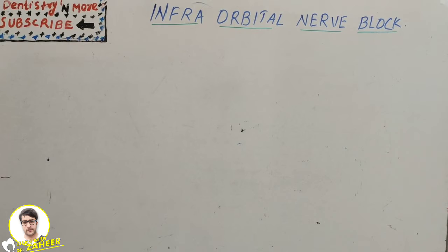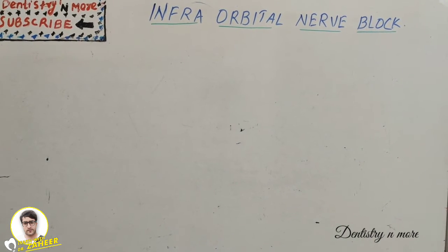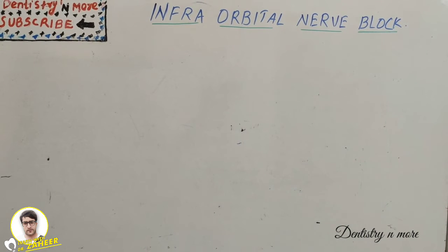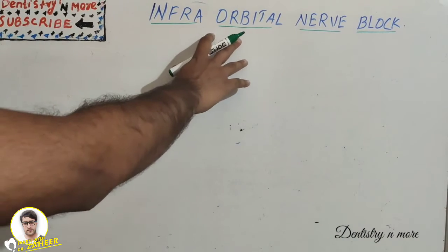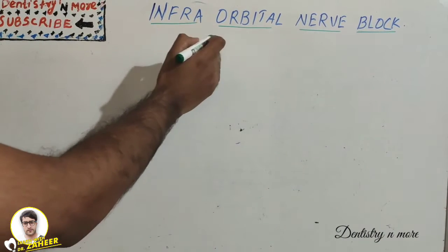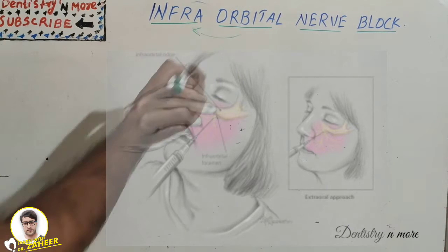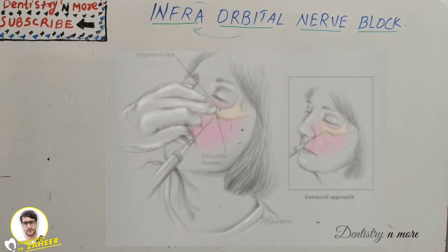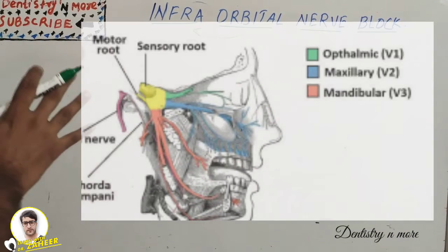Hello everyone, welcome back to another session on dentistry and more. Today we have a nerve block that is the infraorbital nerve block. It is a maxillary nerve block which is given just below the orbit, that is why it has got this name infraorbital. Before moving on, we need to understand a little bit about the nerve anatomy.